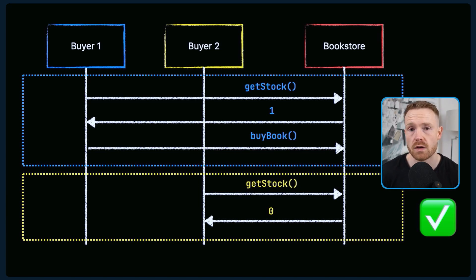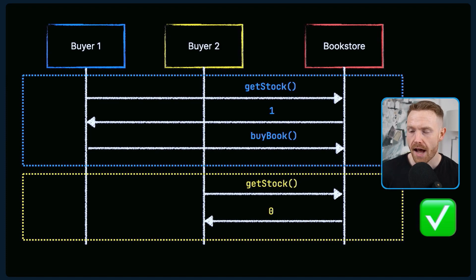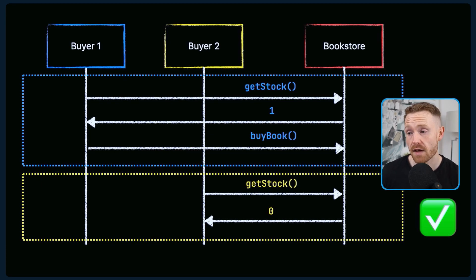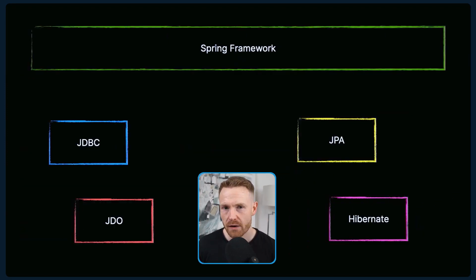So when buyer two comes along and asks, the bookstore can say 'no, I have zero books in stock.' The dotted line is the transaction — that becomes the minimum unit of work. Everything that happens inside that dotted line either happens all together or not at all.